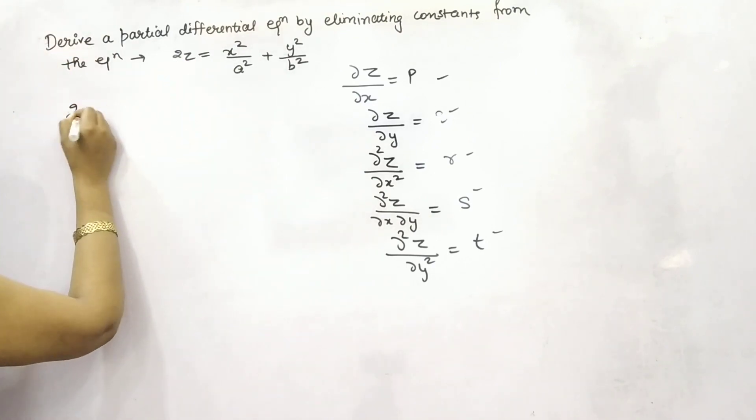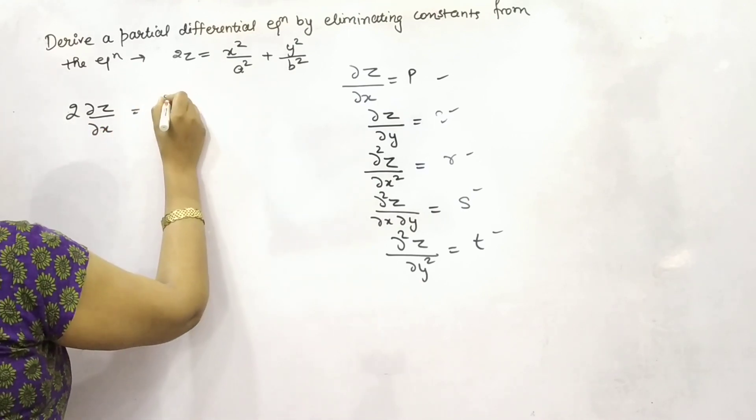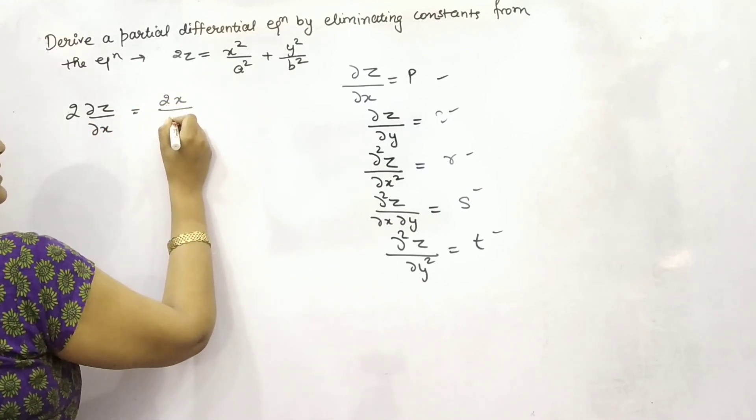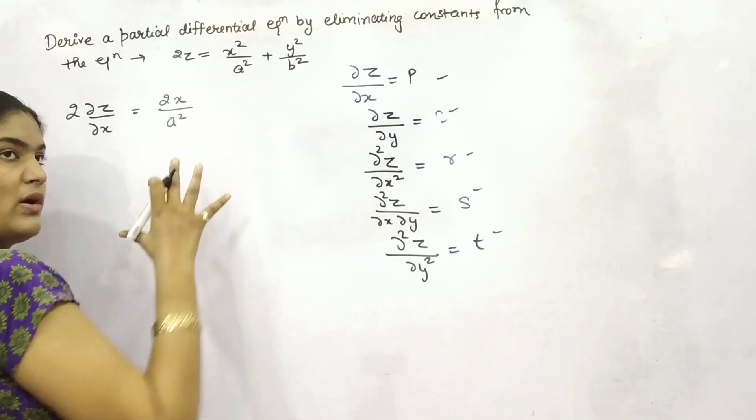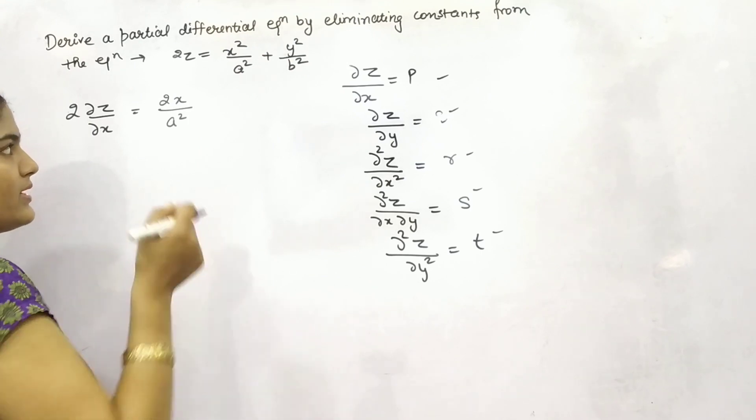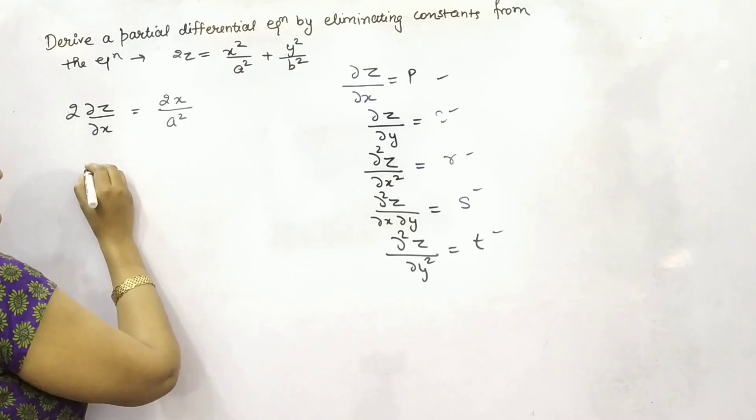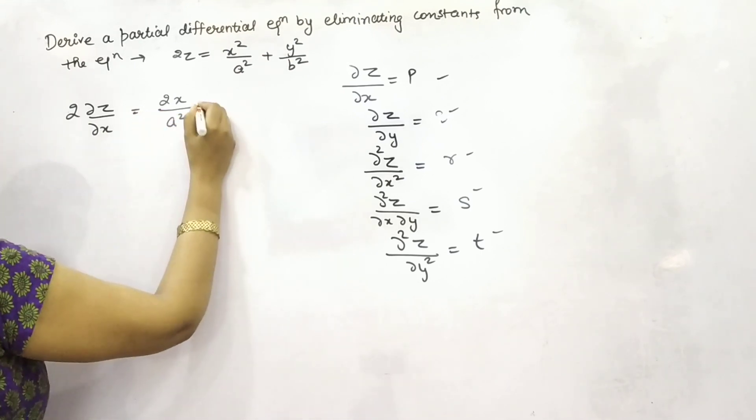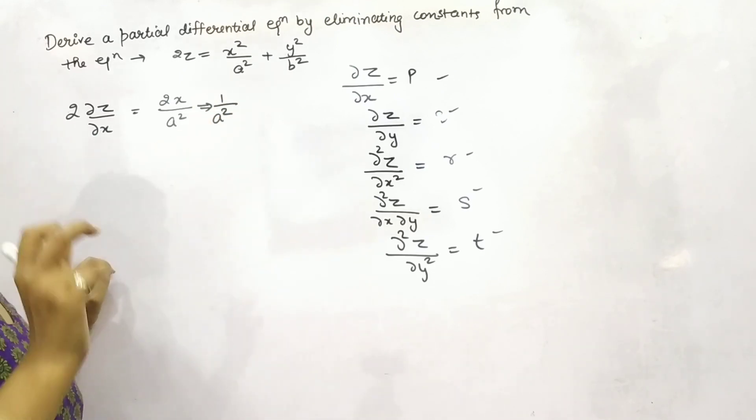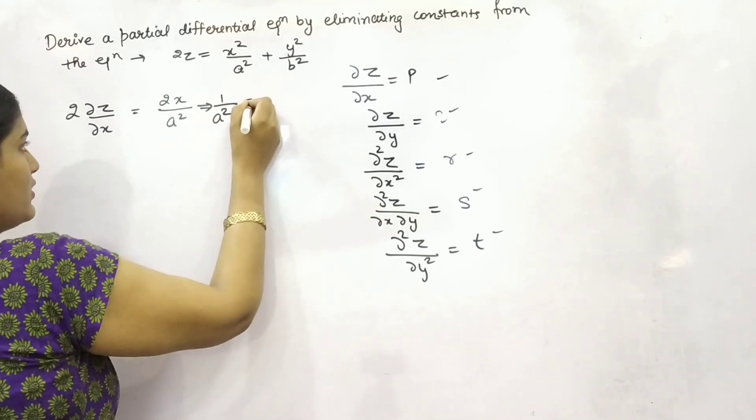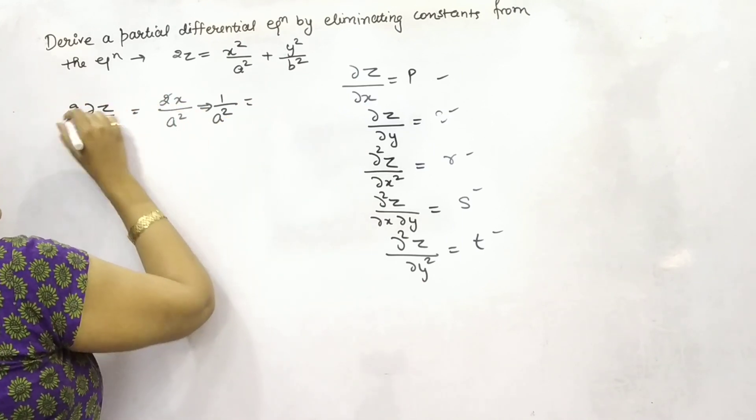So if you will do it with respect to x keeping y constant, differentiation of x is 2x by a square because a is constant. And we are not taking y because we are doing with respect to x. So you can see that if you want to find out the value of constant only 1 by a square what will you get? 2 is cancelled with 2.